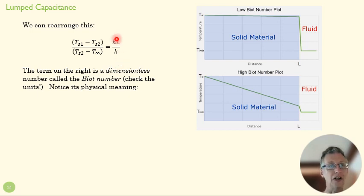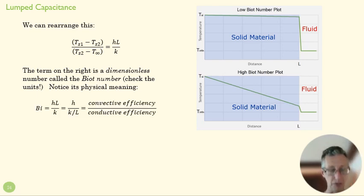That hL over k is a dimensionless number - you can check that if you do your units with h, k, and L - called the Biot number. Its physical meaning is basically how effective is the convection here. In other words, are we removing energy from that surface quickly? And how effective is the conduction? In other words, how effective are we moving energy from that one inside wall to the outside wall?